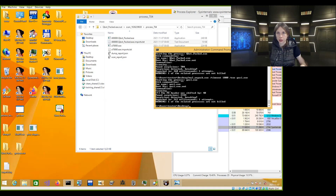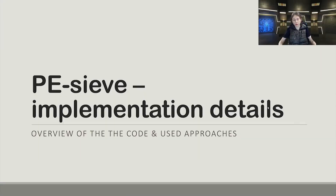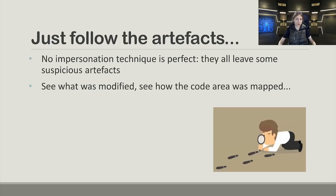This is all for the demos. Thank you. Now as a bonus for the curious, I will show some PECF implementation details — a hint of how PECF does what it does. First of all, no impersonation technique is perfect; they all leave suspicious artifacts. What PECF does is basically find and follow those artifacts — see what was modified, how the code area was mapped, and so on.